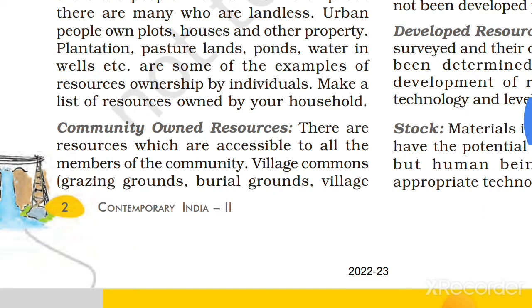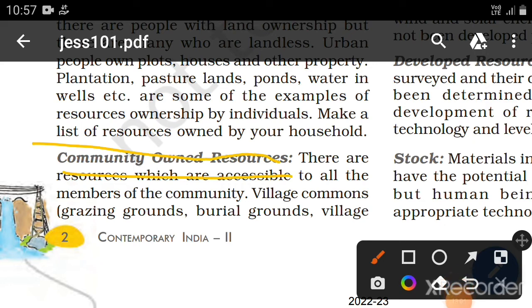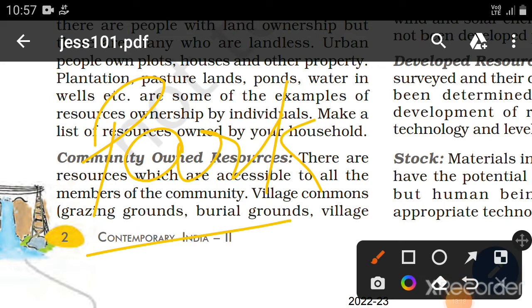Community resources are resources which are accessible and useful to all members of a community. For example, a park outside your house — all the members of your society use that park. It doesn't belong to any one person; the accessibility of that park is for the entire community. Hope that is clear.